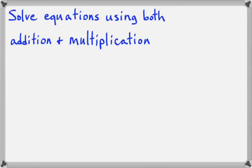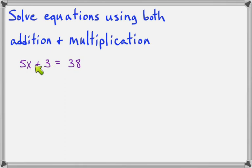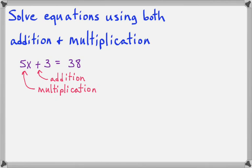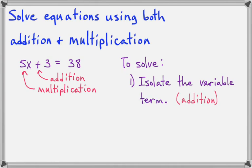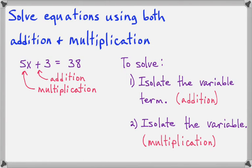In this lesson, we're going to talk about how to solve equations using both the addition property and the multiplication property that we've already looked at separately. Now we're going to put them together. Here is a good example of an equation that has both addition and multiplication. To solve these, we need a strategy: first, isolate the 5x term by getting rid of the 3 — that will be an addition step. Second, isolate the variable by getting rid of the 5 — that will be a multiplication step. First eliminate any extra terms, then eliminate the coefficients.